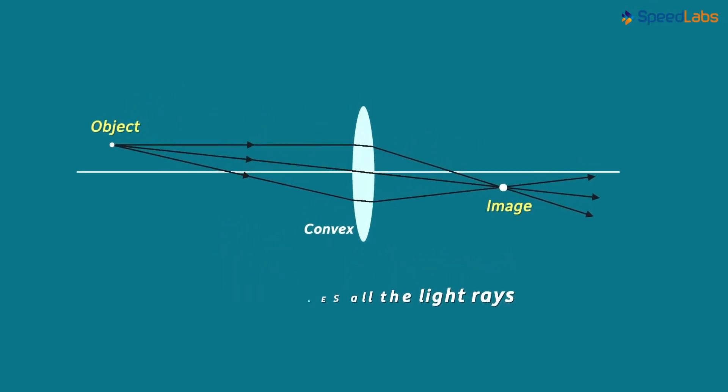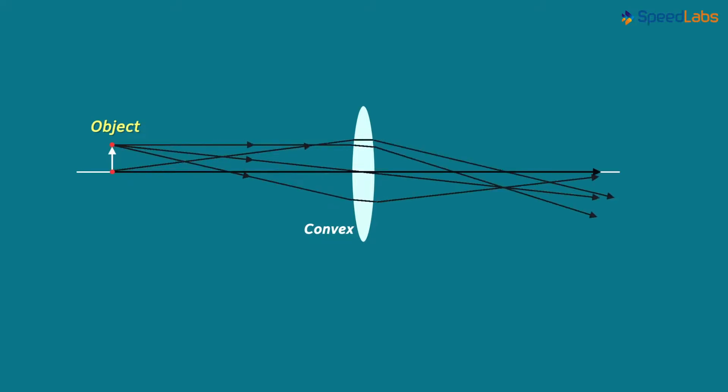But usually our objects are big and not just a single point. So let's use an arrow to denote an object. We can take points on the arrow and find out the image for each point. Finally, we join all the image points together to get the complete image.